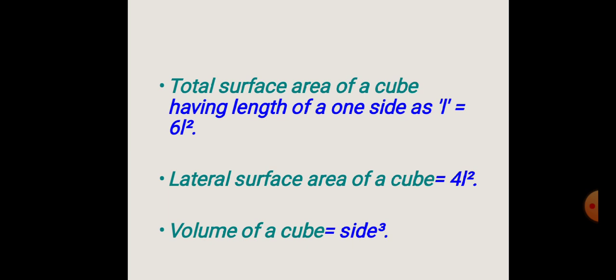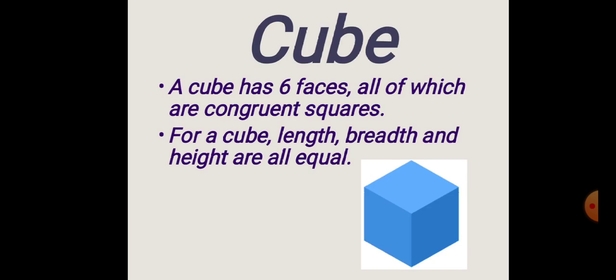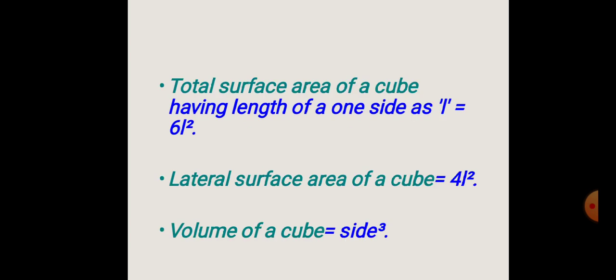Volume tells us how much capacity an object has. A cube has length, breadth, and height, and all three are equal. So the volume of a cube is equal to side cubed, that is L³.